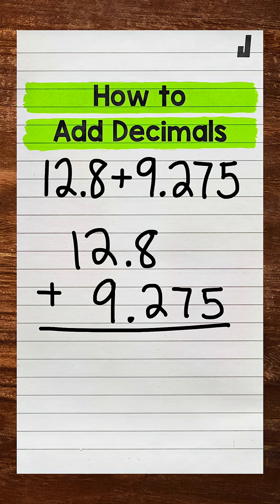So the decimals are lined up and this is going to line up all of the places. Now this problem looks a little offset. 12 and 8 tenths just goes to the tenths place and then 9 and 275 thousandths goes to the thousandths place.